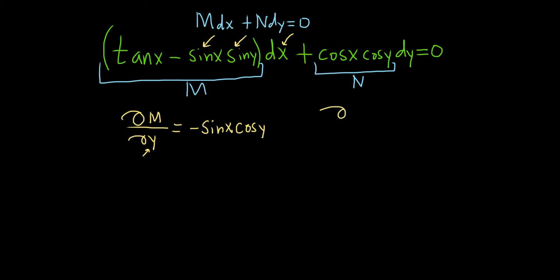Over here we compute ∂N/∂x. Since there's a y here, we use x as the variable. This time cos(y) is a constant, so the derivative of cos(x) is -sin(x), and the cos(y) just hangs out. These are the same, which is good, so it's exact.